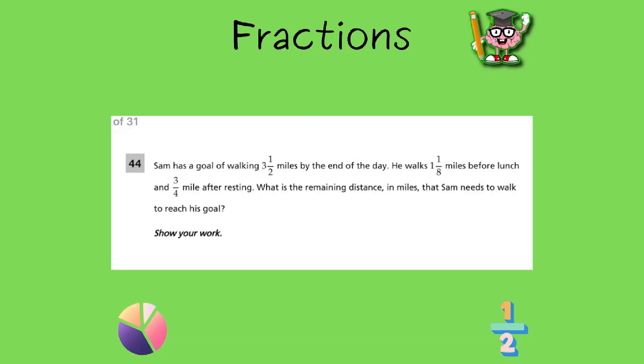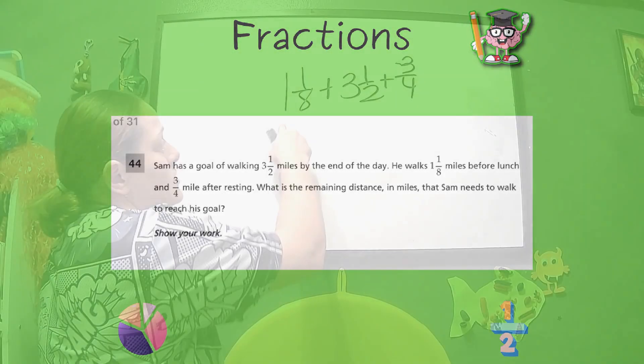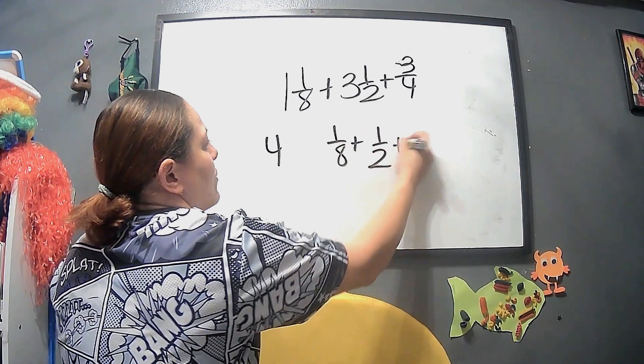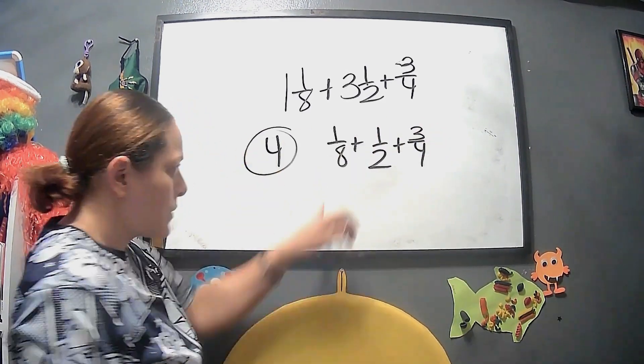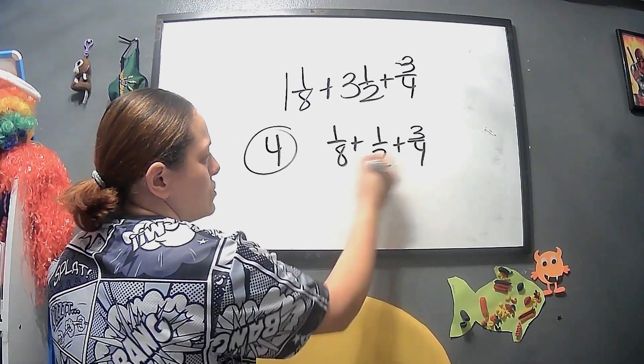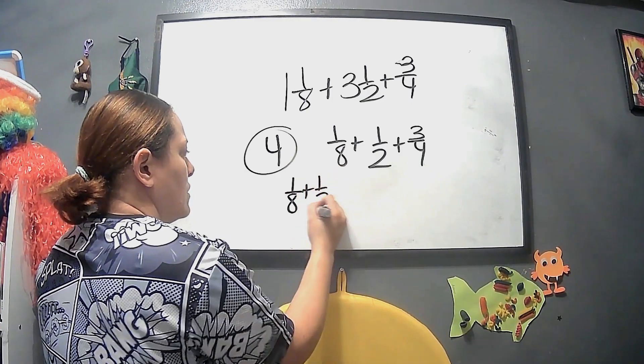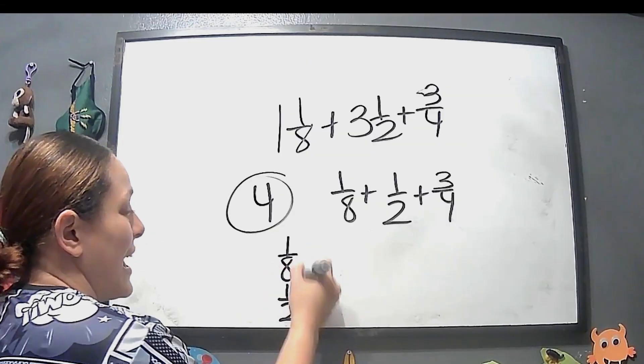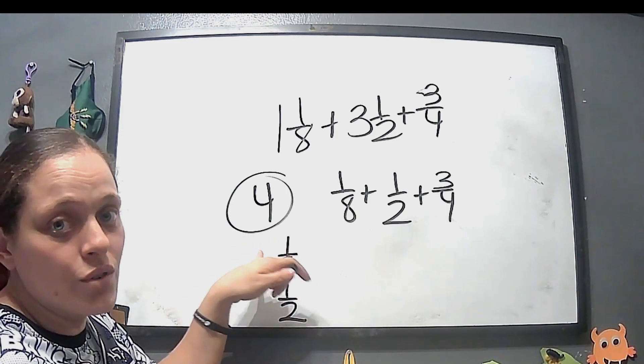Now we have an open-ended word problem — you can't just choose A, B, C, or D. You have to show your work. For this problem, make sure number one: you have the right measurements; number two: you read thoroughly to understand it; number three: show your work. We need to add, and 3 plus 1 is 4 — put that to the side. Now we have 1 eighth, 1 half, and 3 fourths left.